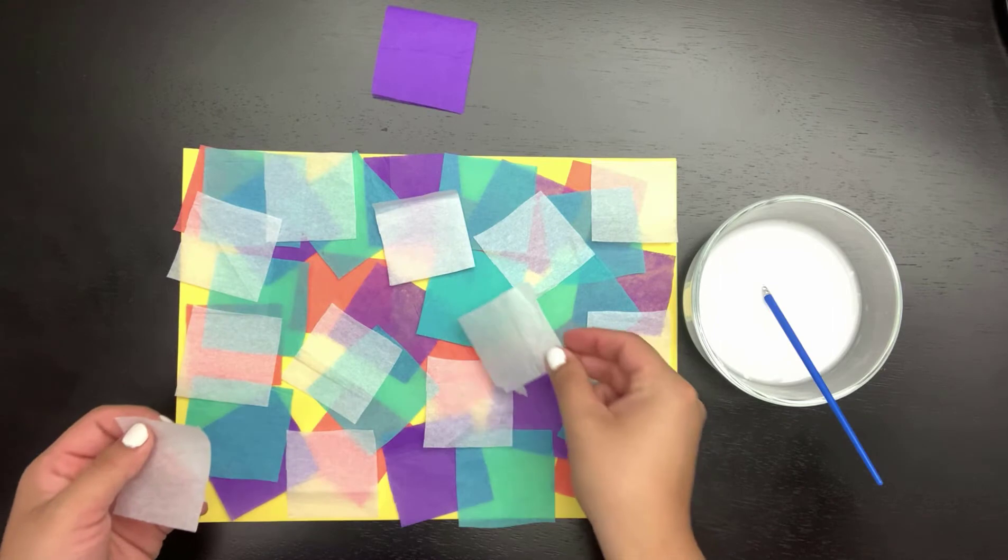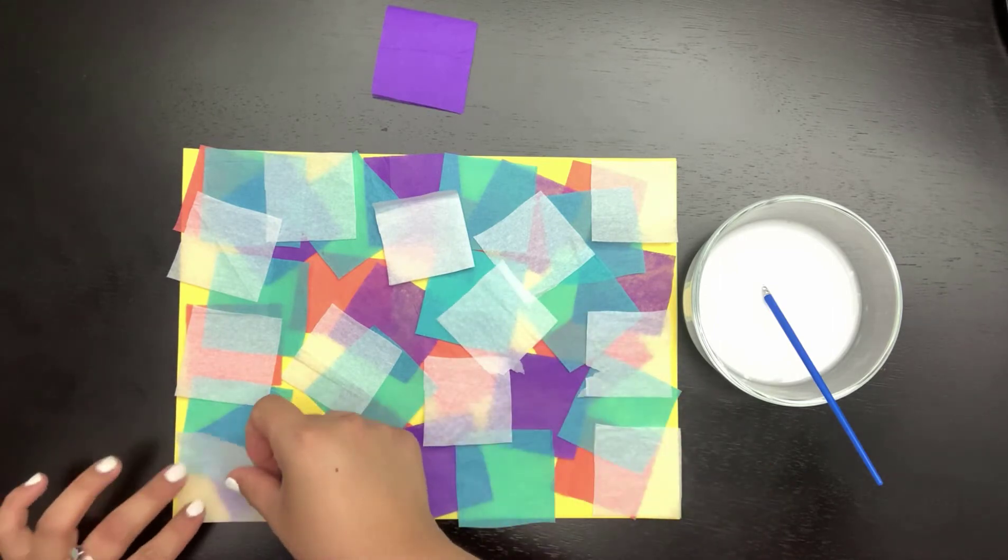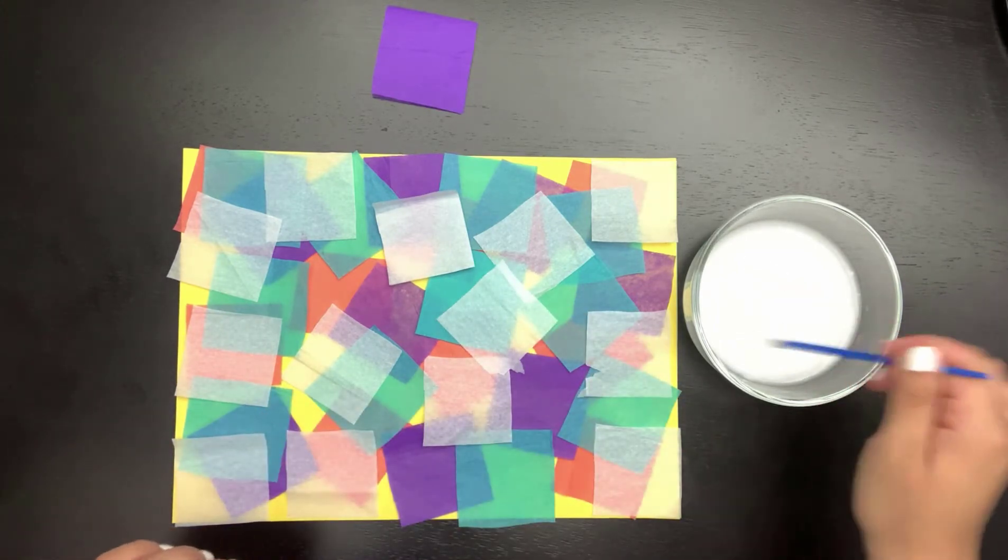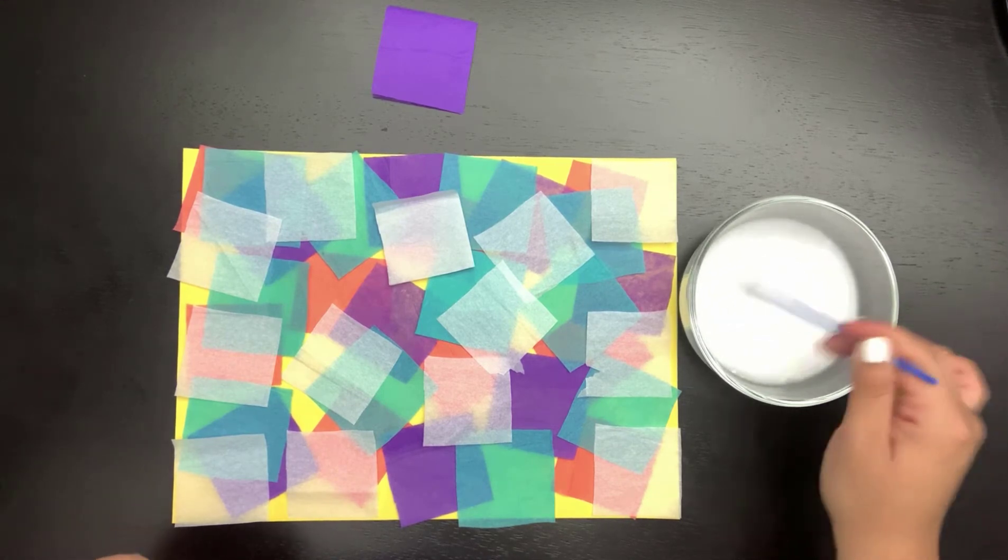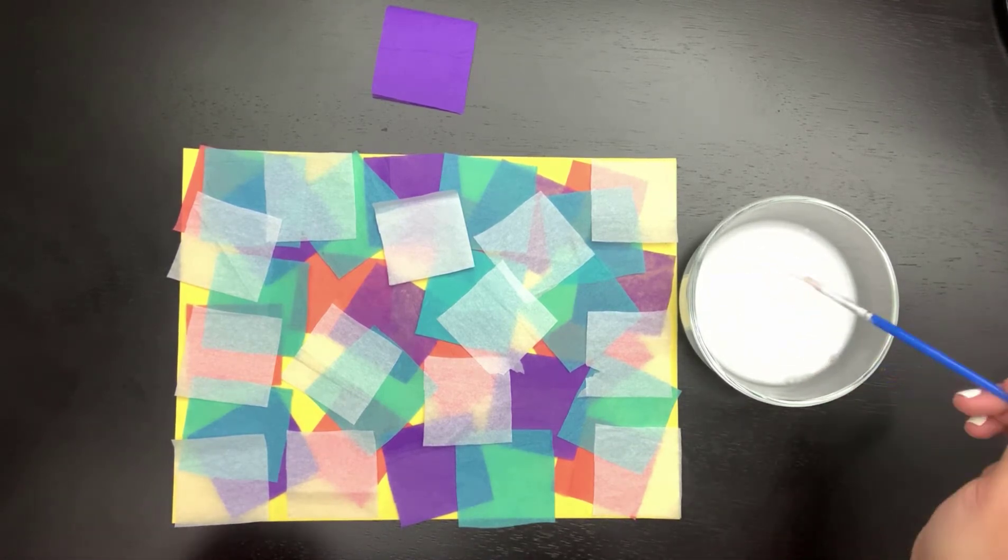Once all of the tissue paper squares we want to use are placed on the construction paper, we will then take our paintbrush and paint over the squares with the water and glue mixture.